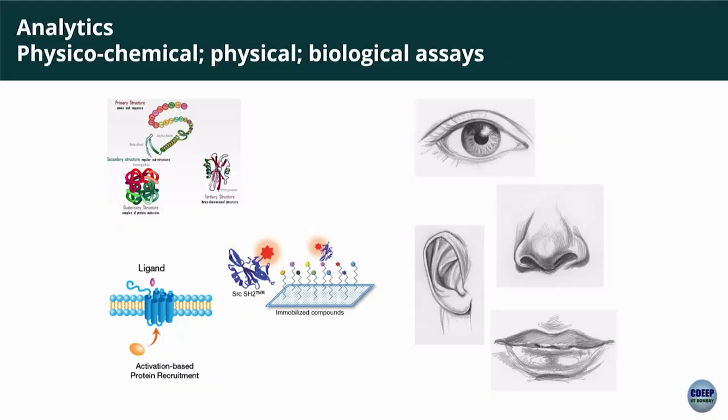Manufacturing facilities also require a large engineering group to manage the physical infrastructure — huge structures, pipes, and systems. Analytics serves as the eyes, ears, nose, and mouth of the process and product. You must be able to measure the product very specifically, and there are many different tests to perform.